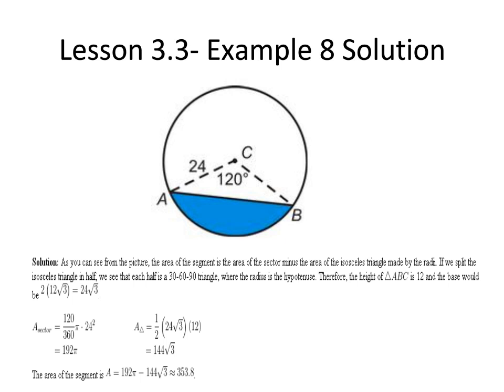With this information we can calculate the area of the sector and the area of the triangle. The area of sector equation is 120 over 360 times pi times 24 squared, which makes the area of the sector equal 192 times pi.